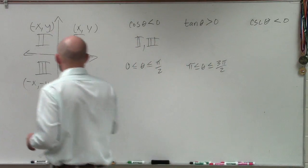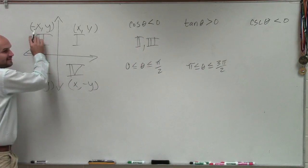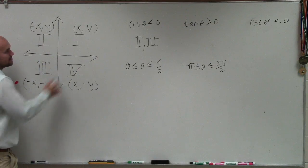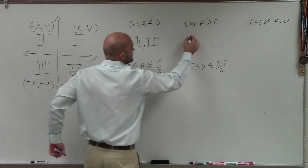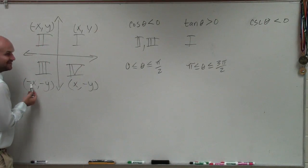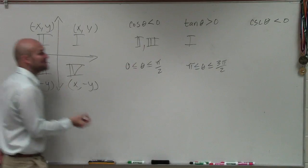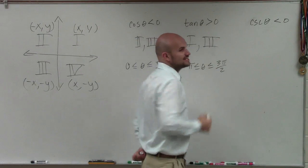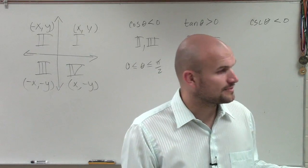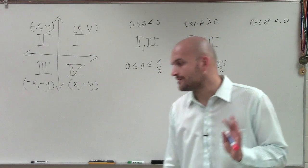First and second. But what if I had y over negative x? What would that be? Negative. So that one works. Well, what happens when you divide a negative and a negative? That turns positive. So actually, when tangent is positive, tangent is positive in the first and third quadrants.